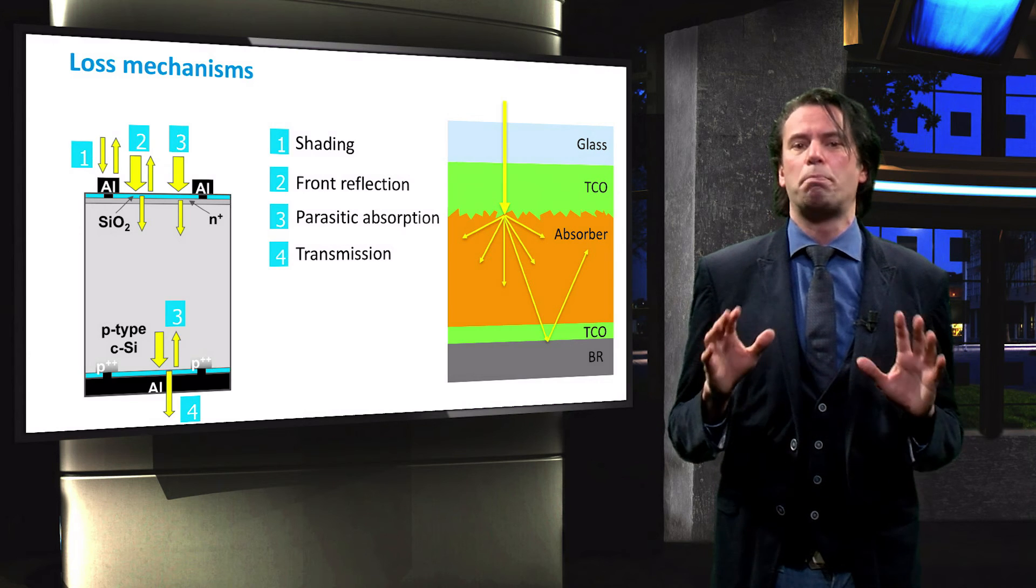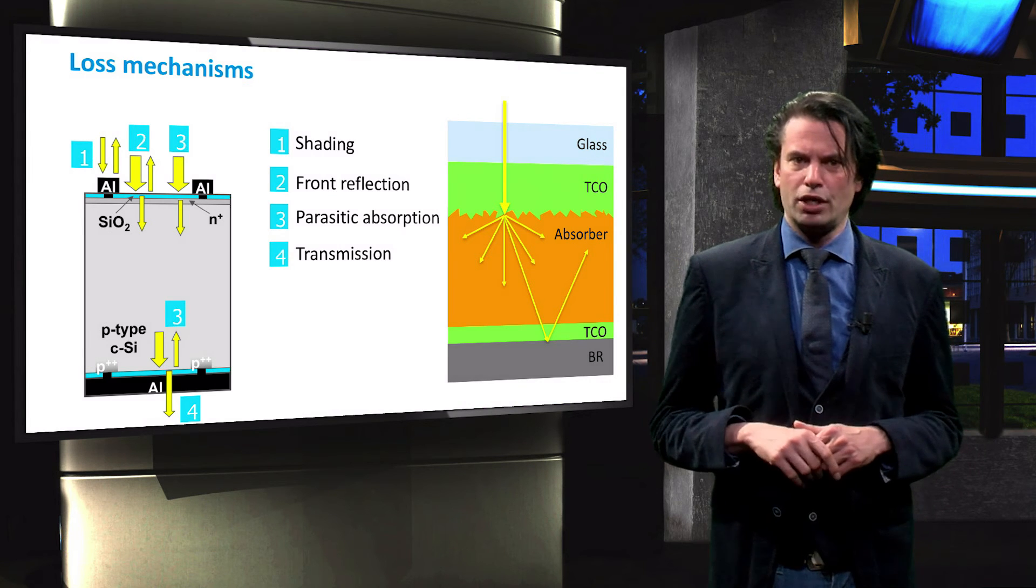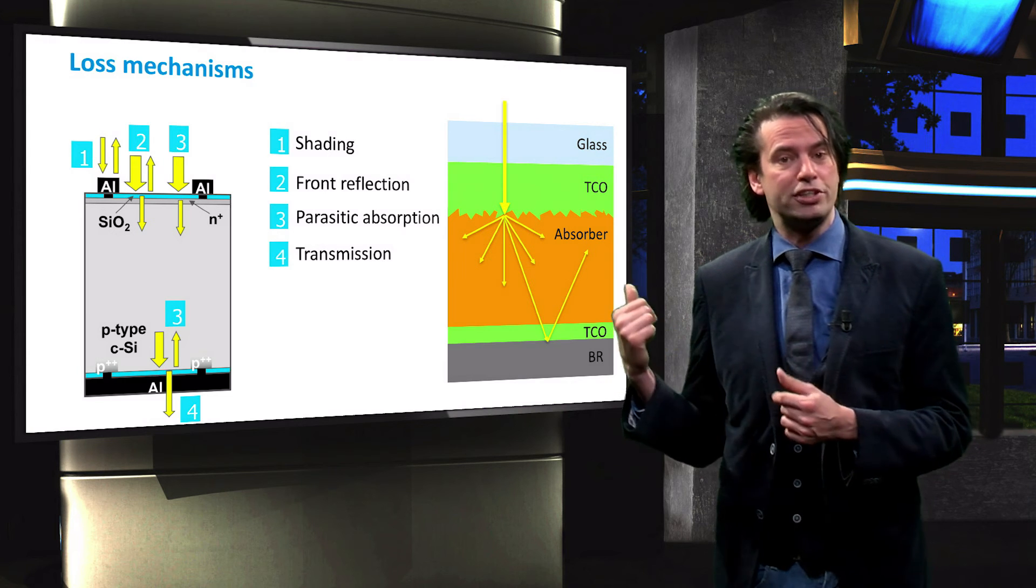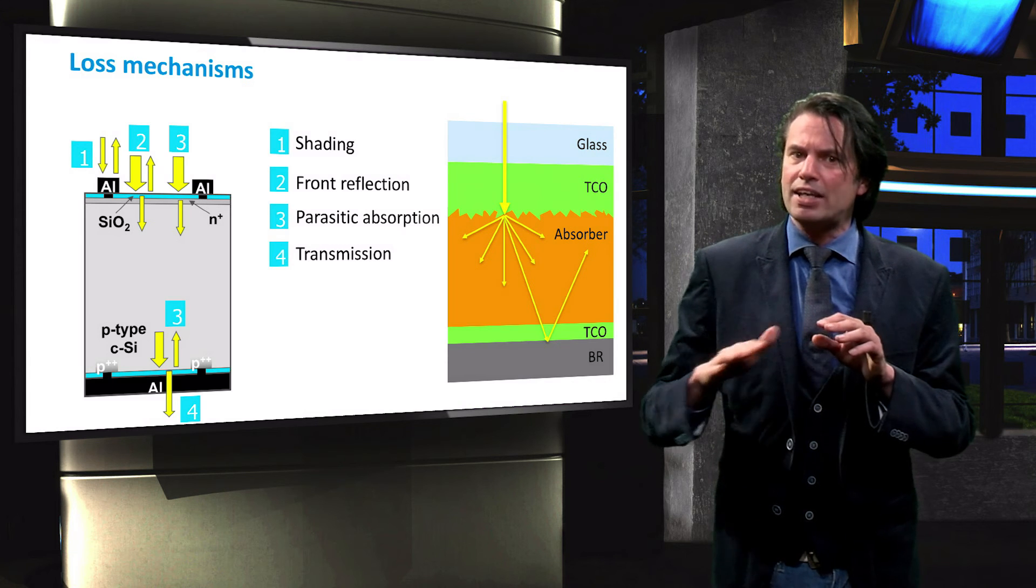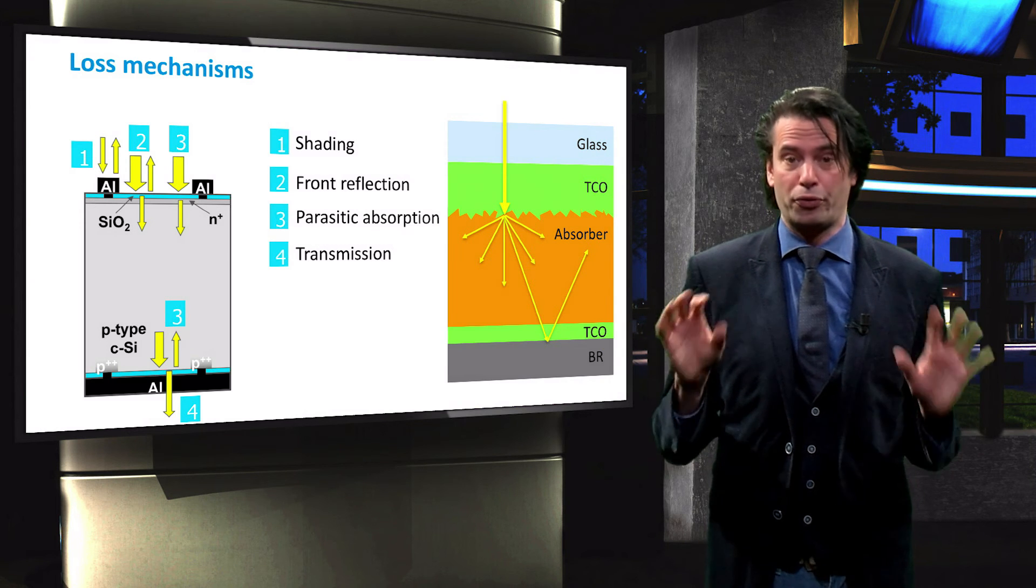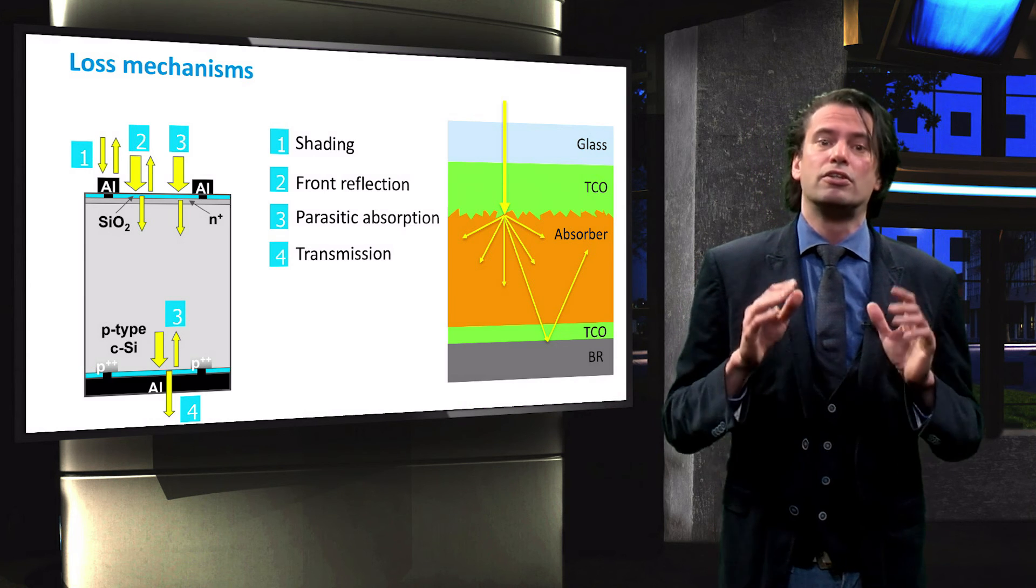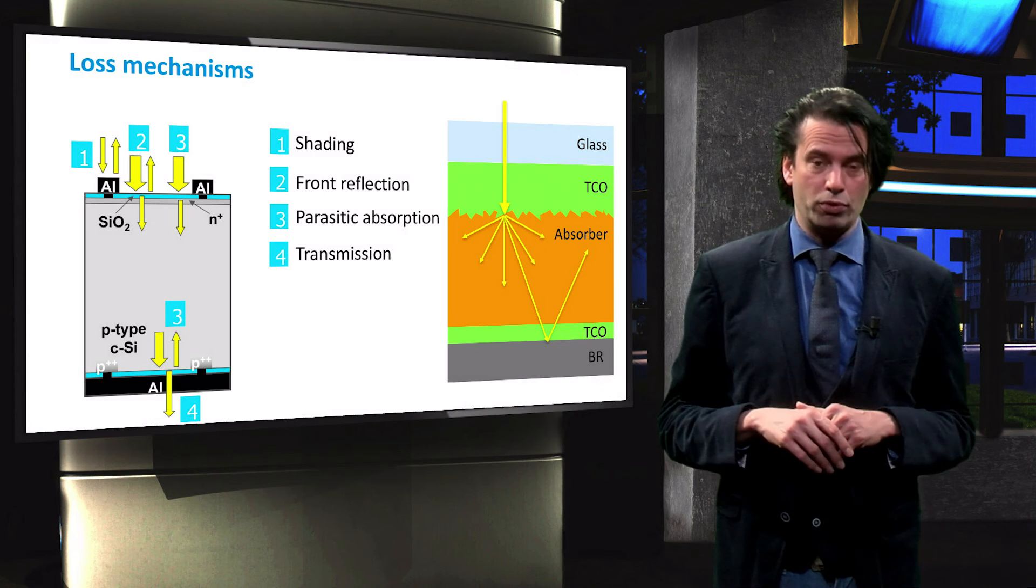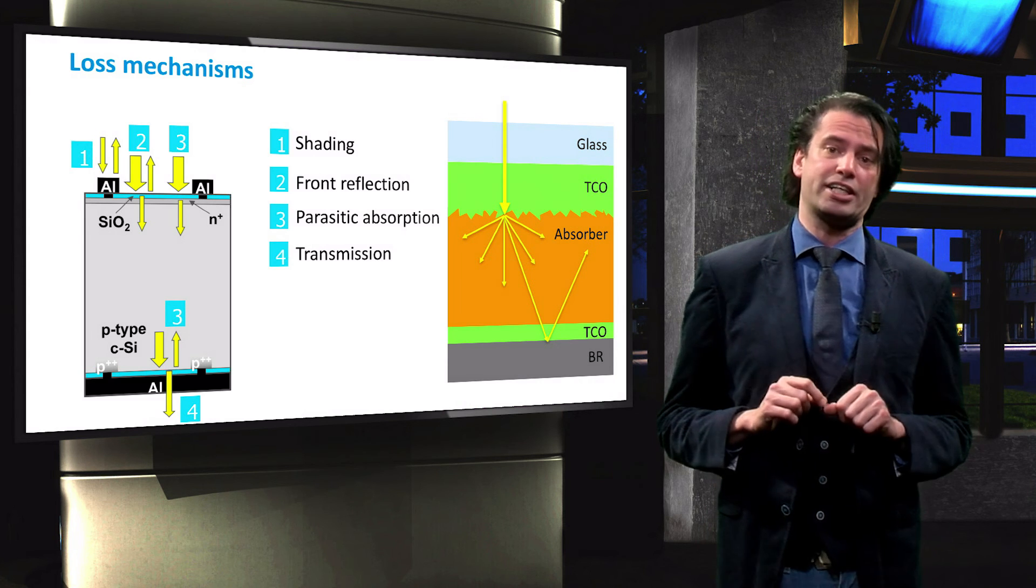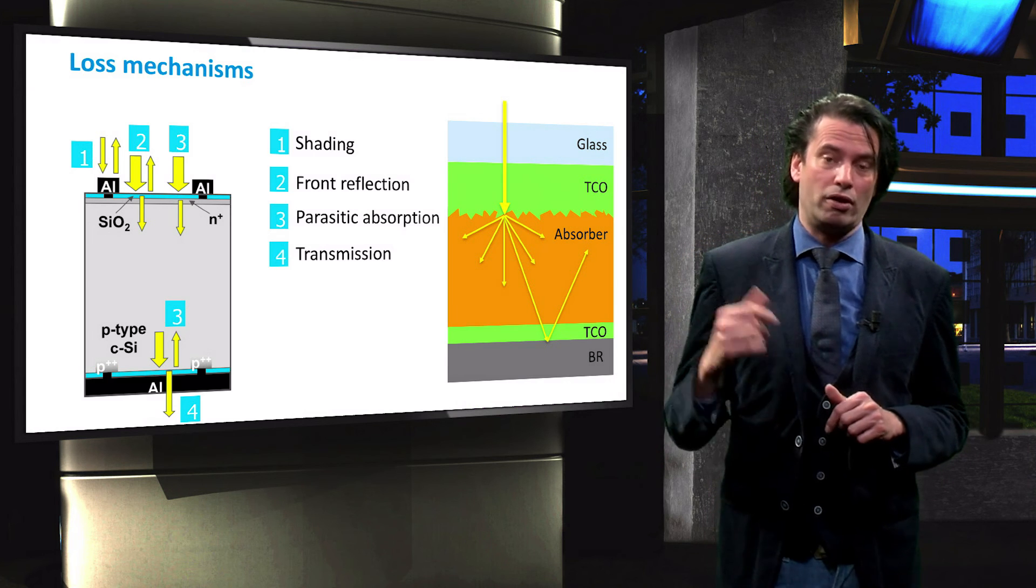Several tricks are applied to increase the path length of photons in the absorber layer. Two of these are shown in this figure. The shown cell applies light scattering at the front and a reflective layer at the back of the cell. The scattering of light is applied to deflect light away from the direction perpendicular to the surface, which is the shortest path through the cell. The farther a light beam is deflected from this perpendicular direction, the larger the path length through the absorber layer will be. A reflector at the back of the cell allows the photon to pass through the cell for a second time. The scattering of light and back reflectors are extensively discussed later on in this course.